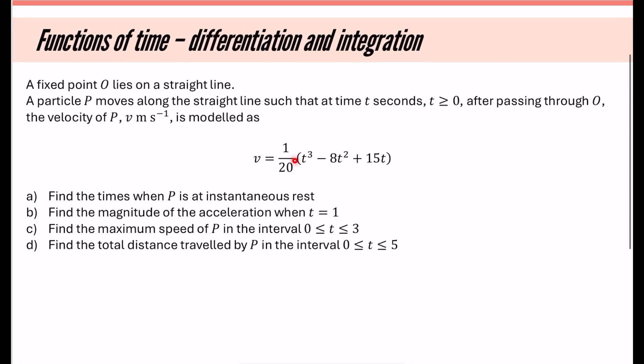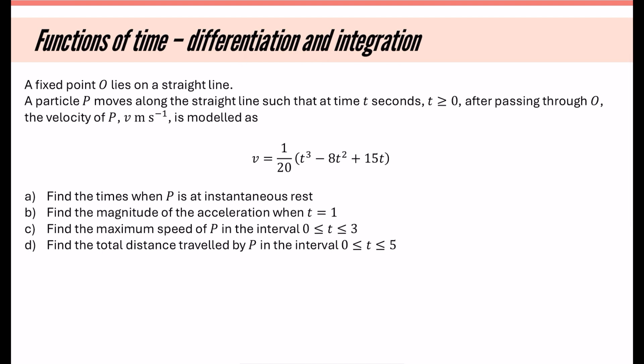We're looking at functions of time and doing differentiation and integration for variable acceleration. It says a fixed point O lies on a straight line. A particle P moves along a straight line such that at time t seconds, t ≥ 0, after passing through O, the velocity of P, v meters per second, is modeled as this. This is the velocity of the particle.